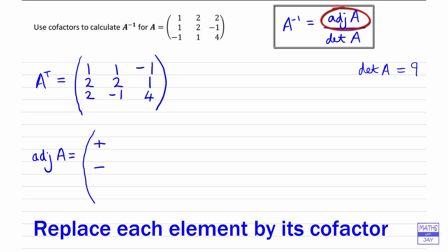And we're going to start off by writing in the signs. So the same signs as we had earlier. So these will alternate. So plus, minus, plus. So the signs are alternating, plus, minus, plus. So for the first element, we're looking at the determinant 2, 1, minus 1, 4.